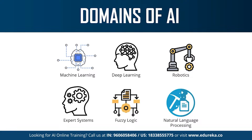Under machine learning, there's supervised, unsupervised, and reinforcement learning. Next we have deep learning or neural networks. Deep learning is the process of implementing neural networks on high-dimensional data to gain insights and form solutions. It is the logic behind Facebook's face verification algorithm, self-driving cars, and virtual assistants like Siri and Alexa.